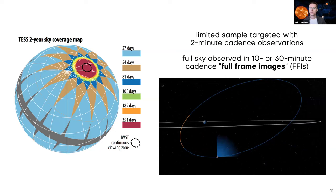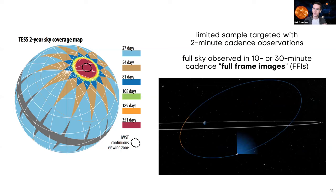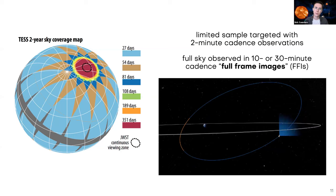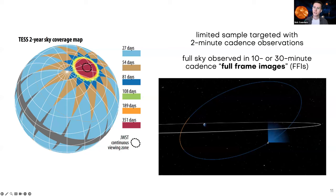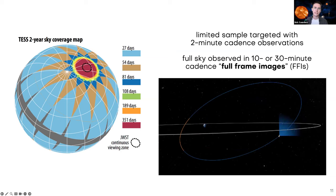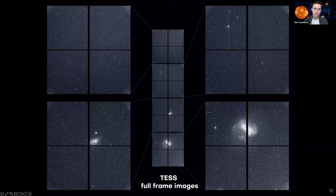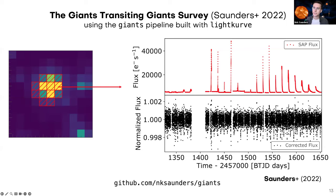Luckily, with TESS — the Transiting Exoplanet Survey Satellite — we have a much larger sample to search. It's a space telescope that stares at basically the entire sky and provides high-precision space-based time series photometry. Most of the sky is observed for about 27 days at a time, with some regions like the continuous viewing zone being observed for almost a year. The full sky is observed in what's called a full frame image, originally taken every 30 minutes and then updated to every 10 minutes, allowing you to search for planets around all of the brightest stars in the sky.